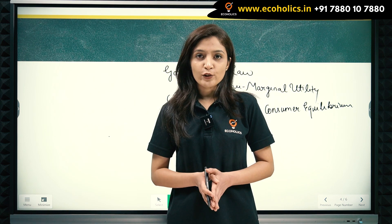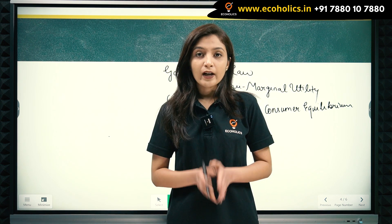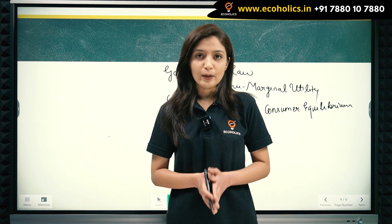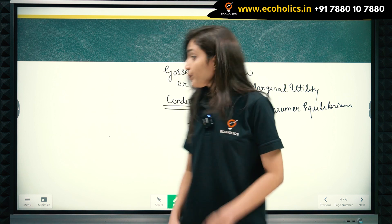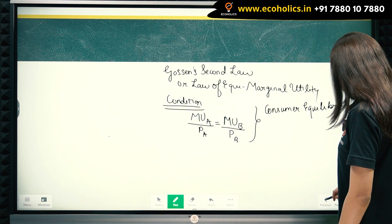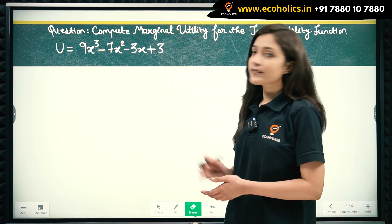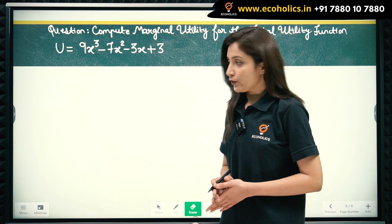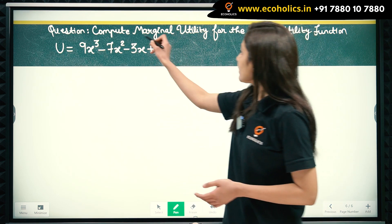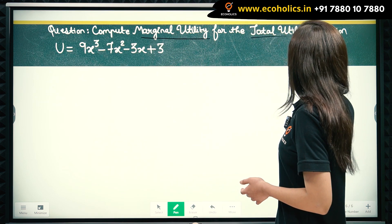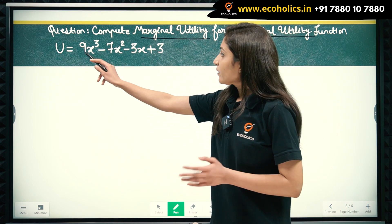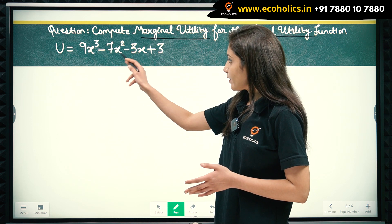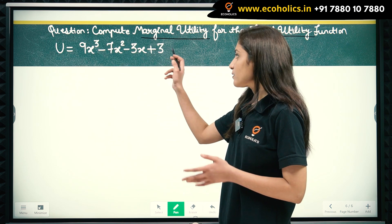A consumer is in equilibrium when he gets maximum satisfaction with his limited income. Now coming to the question: let's take a simple example to understand marginal utility and total utility. We need to compute marginal utility, and our total utility function is given as U equals 9x cubed minus 7x squared minus 3x plus 3.